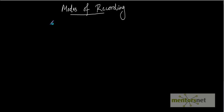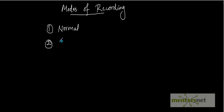Hello everyone. In this video I'm going to explain the modes of recording - how many types of recording are there in QTP. There are three types of recording modes in QTP. The first one is normal recording mode, the second is analog recording mode, and the third is low level recording mode.